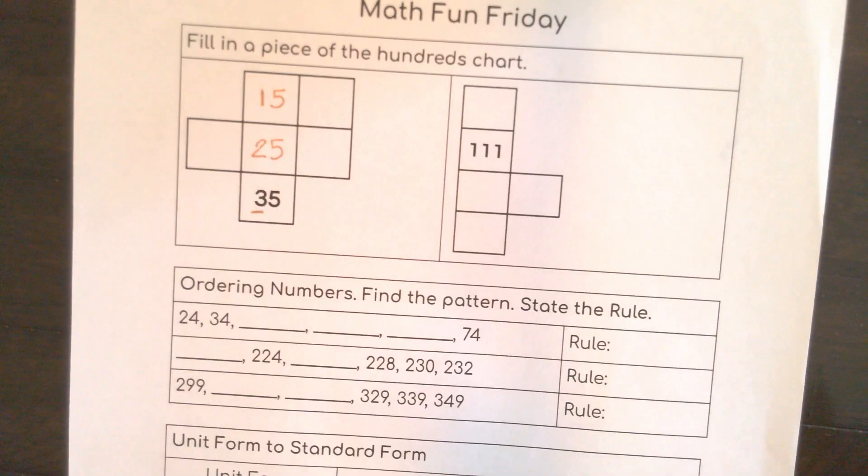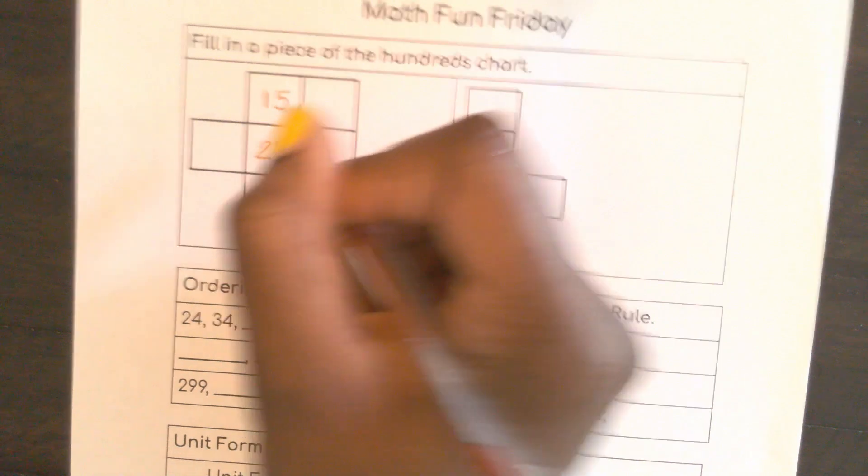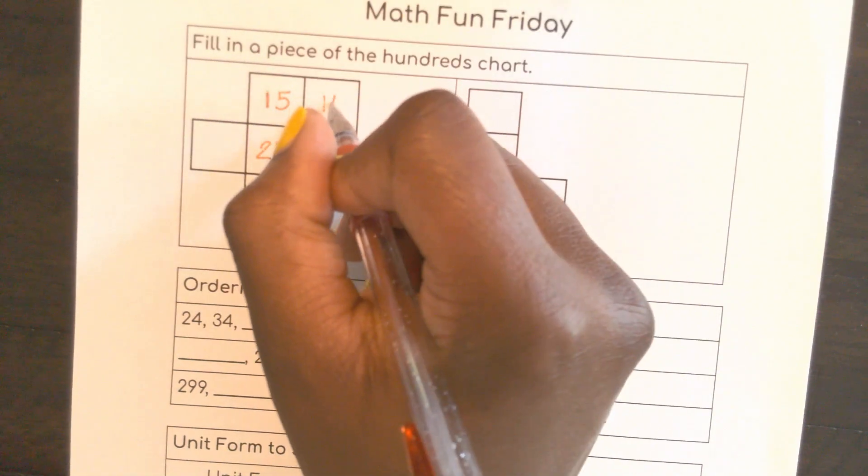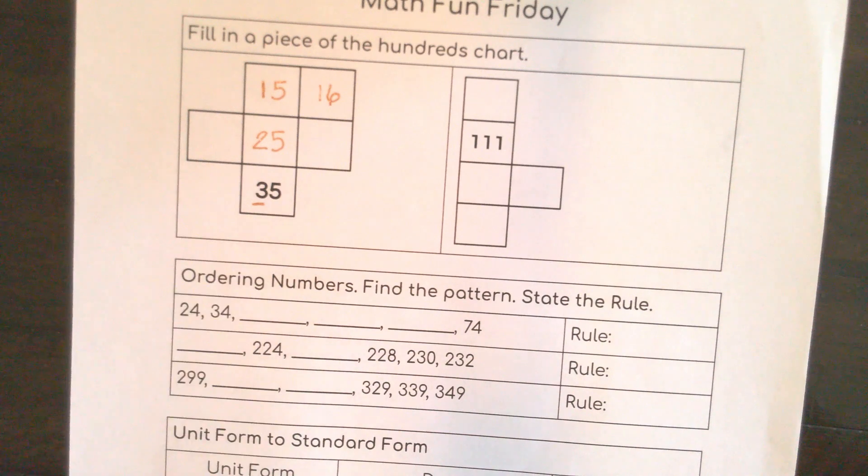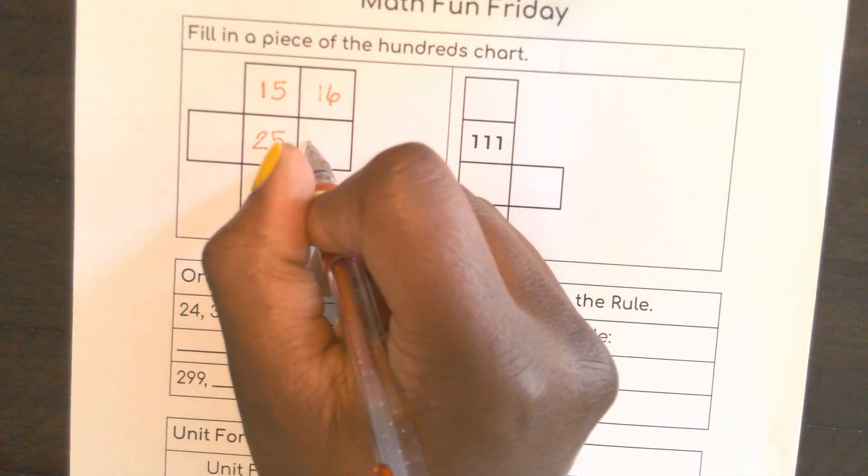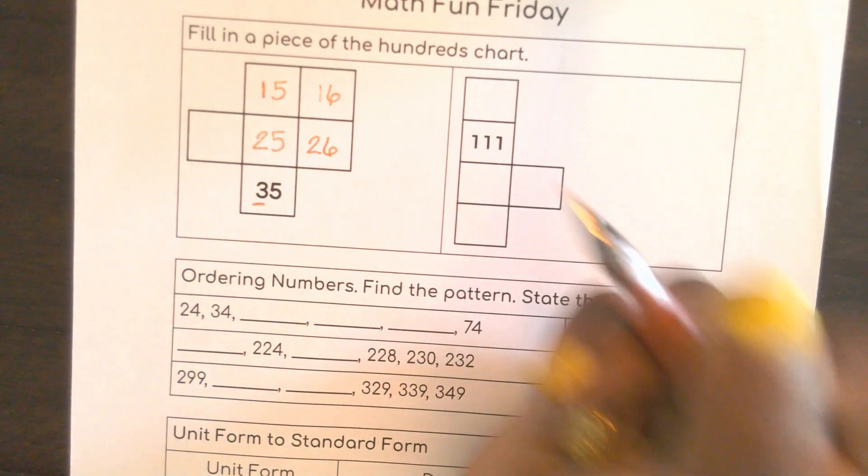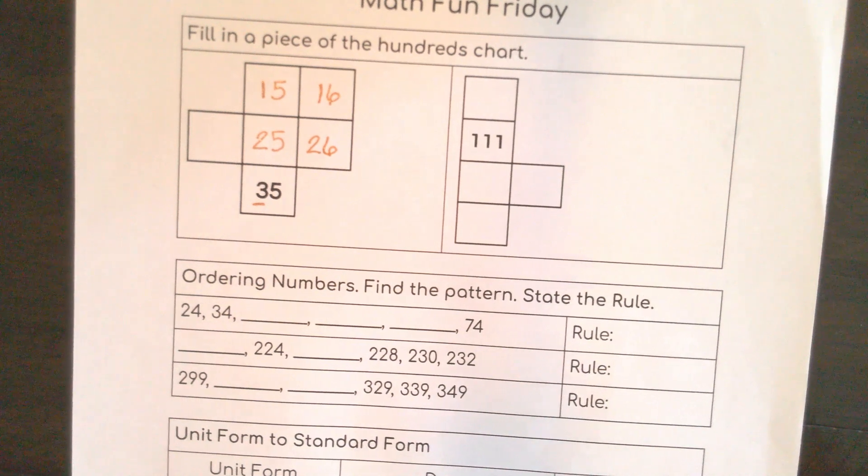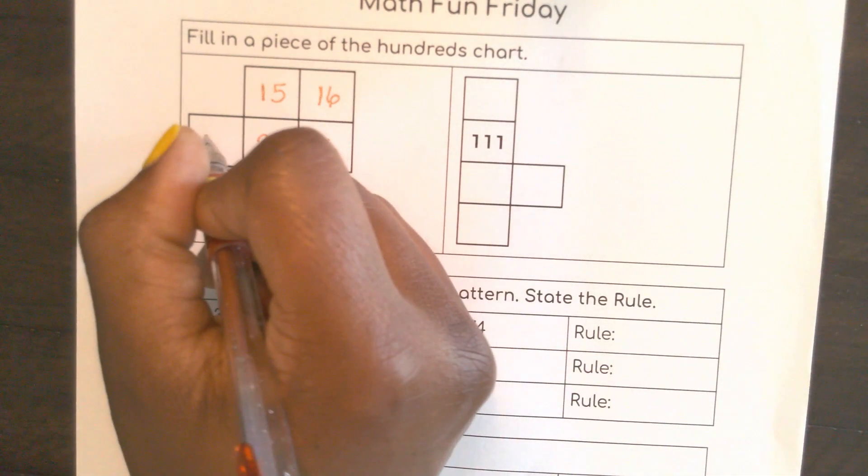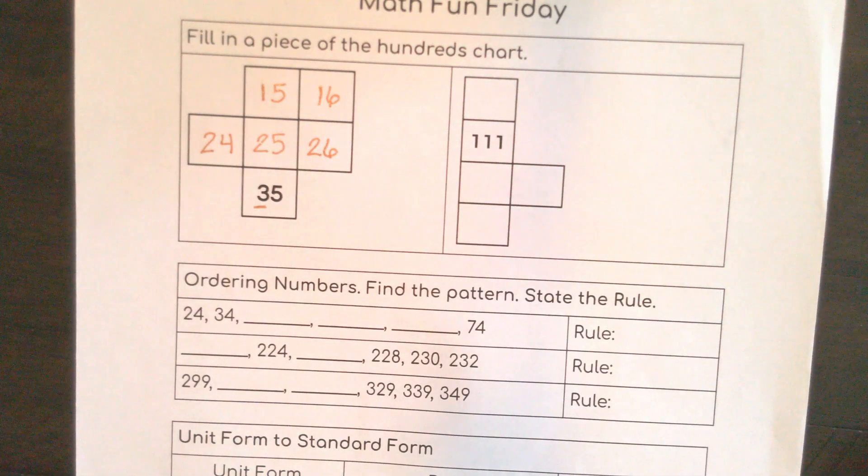Now going left to right, we know that's the easy part because they're subtracting 1 or adding 1. So after 15 I know comes 16, after 25 I know it's 26, and before 25 if I go backwards it would be 24. Excellent work.